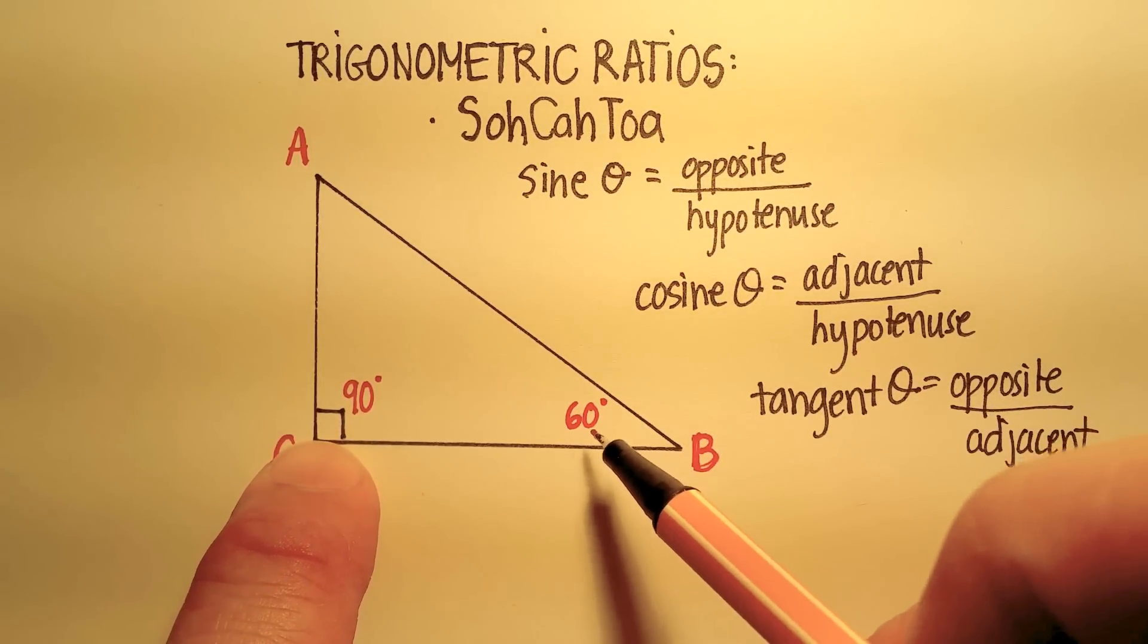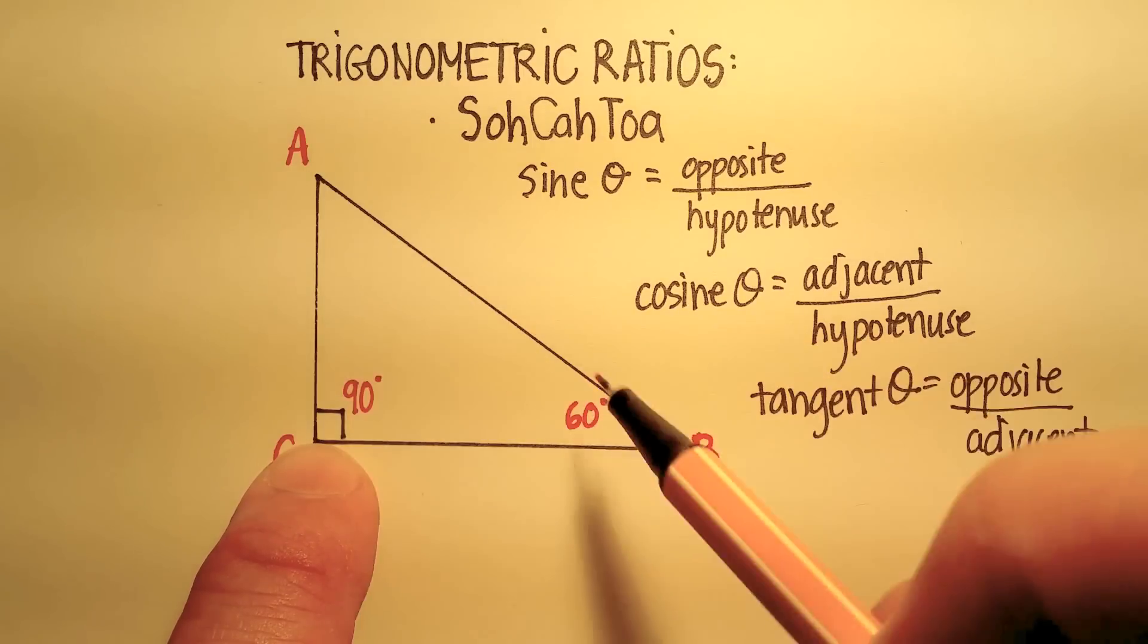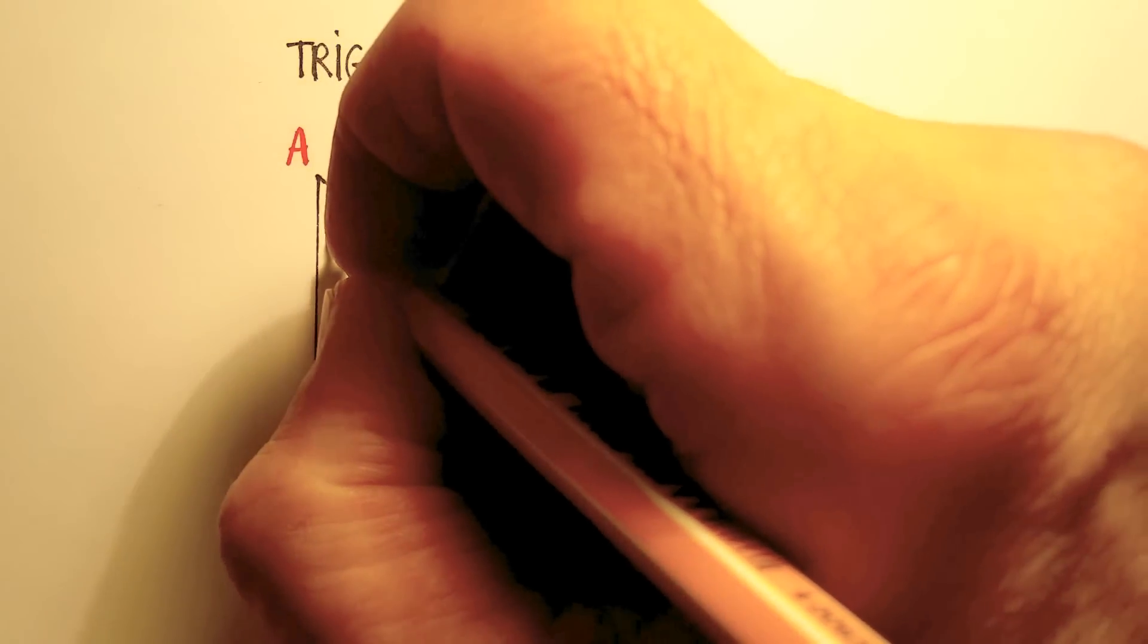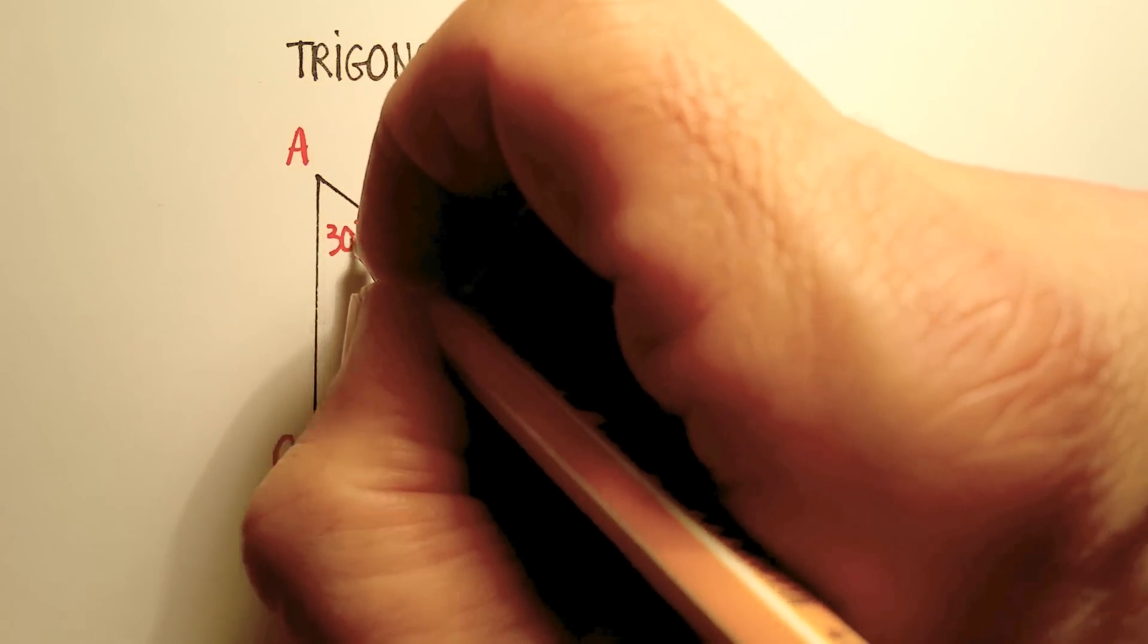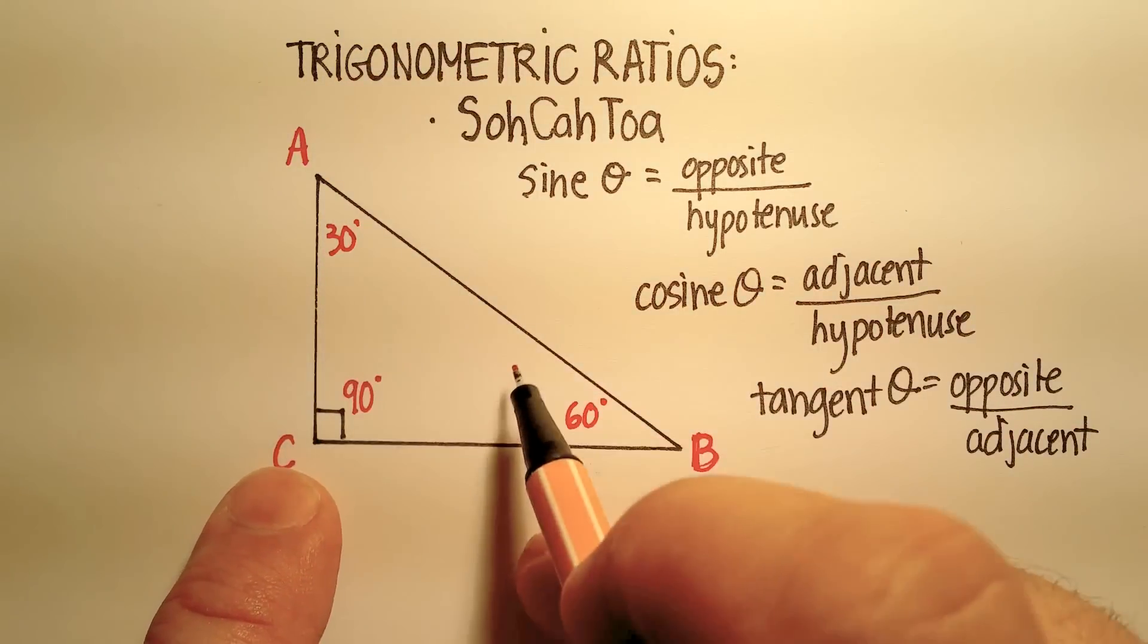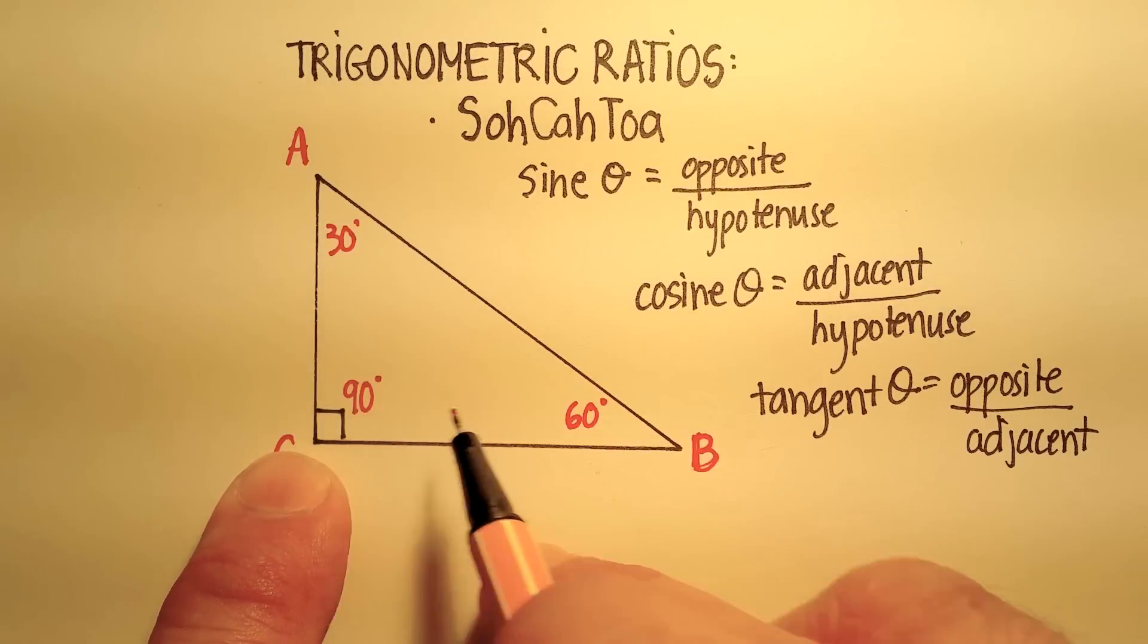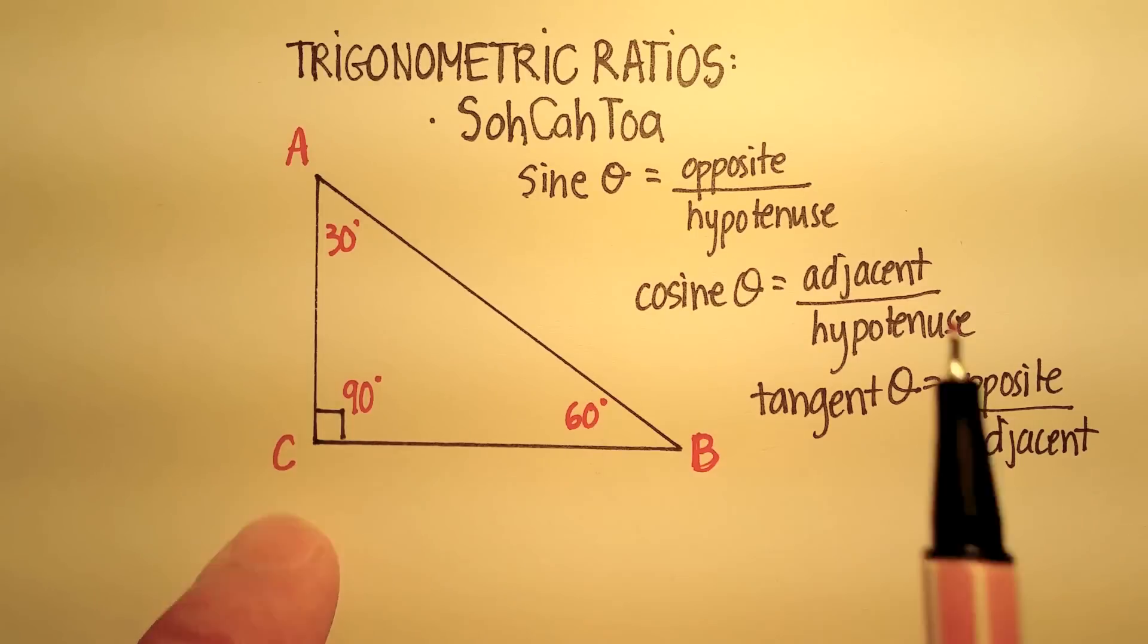If you happen to know one of the other two angles, like for example, this one is given as 60, we know then that this angle has to be 30, because one of the properties of all triangles is that the internal angles all equal 180 degrees.